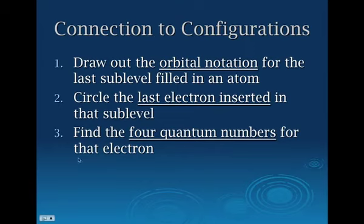So this is just kind of what I've been doing this whole time, connecting it to the orbital notation configurations that we've already done. You draw out the orbital notation for the last sublevel filled in an atom. Basically, what would you call out for electron configuration battleship? And then draw that orbital notation. Circle the last electron inserted in that sublevel and find the four quantum numbers for that electron. You can either circle it or you can highlight it like I was doing on the last one.